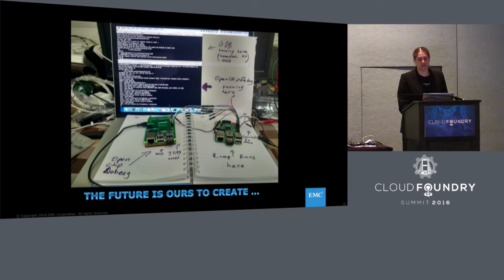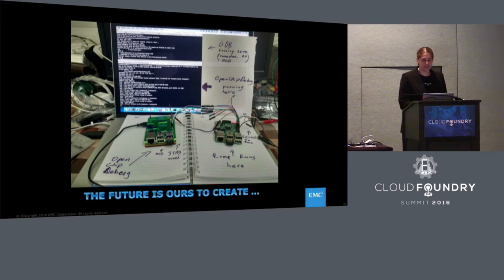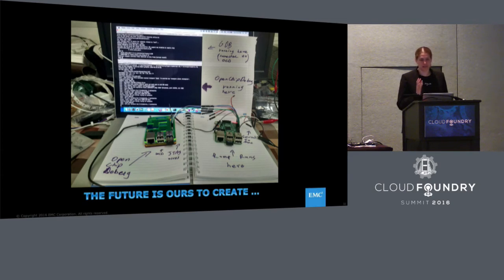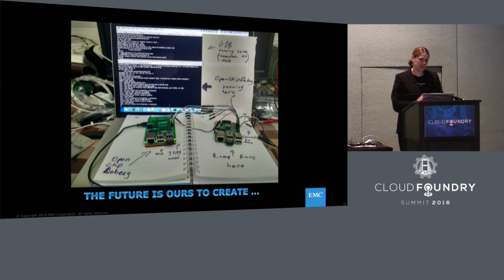The thing I believe is that Internet of Things will be a killer use case. Instead of waiting for that to happen, we should do it. What we did here: we took a Raspberry Pi and attached it to another Raspberry Pi that's actually debugging it. We were the first people in the world to run Rump kernel on a Raspberry Pi. This is how we worked on it — there's a GDB actually debugging it.